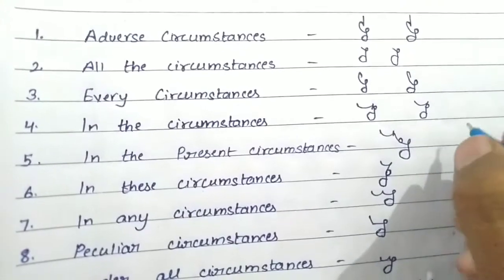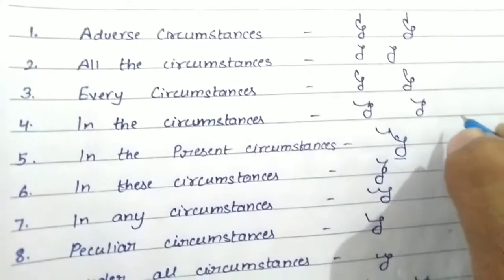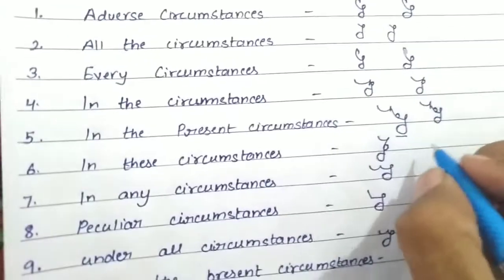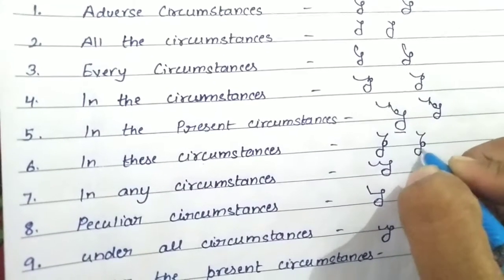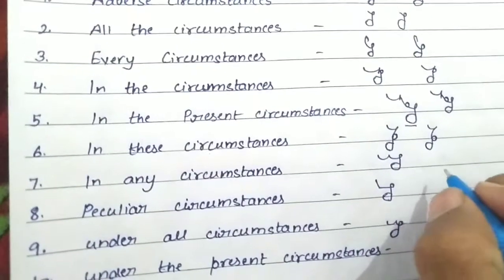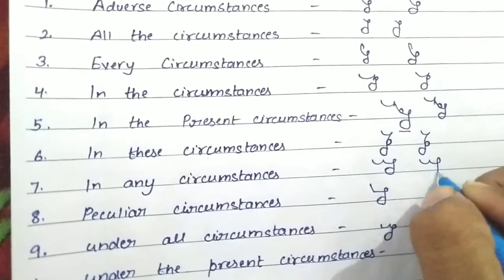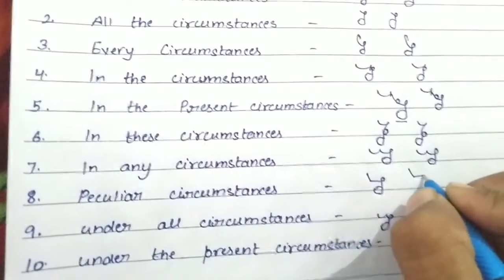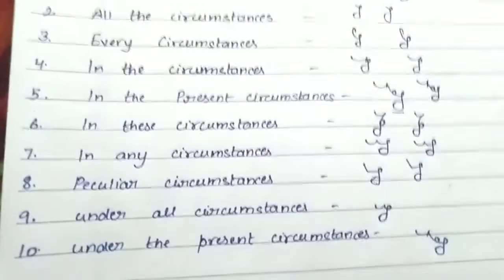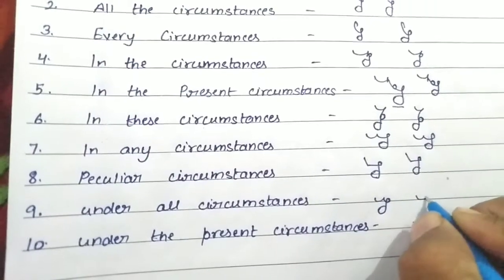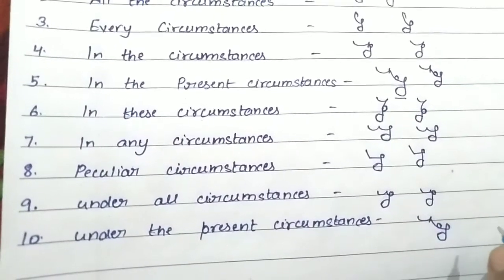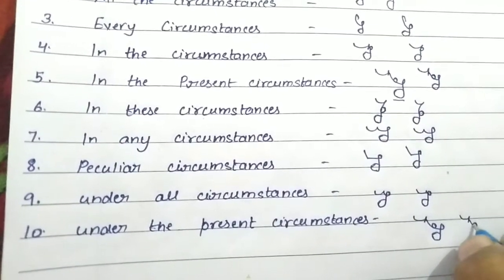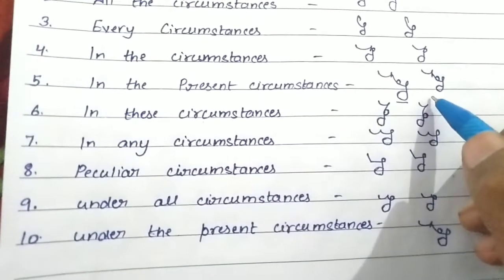The next, which is very frequently used: in the present circumstances, and in these circumstances. Next is: in any circumstances. At eighth number comes: peculiar circumstances. Ninth is: under all circumstances. And tenth: under the present circumstances — this is similar to 'in the present circumstances'.